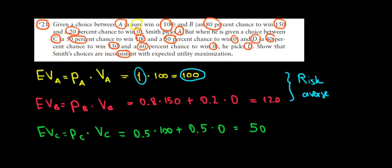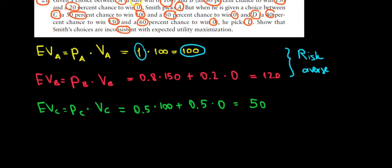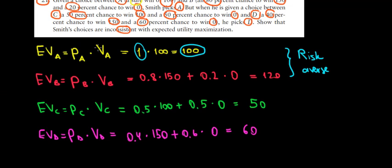Now let's do the same for the expected value of D. So let's go a bit below. The expected value of D is the probability of the outcome D times the value of D. And in D we have 40% chance to win 150, so 0.4 times 150, plus a 60% chance to win zero. If we do the math here, we would have an expected value of 60. And in this case we go for D.